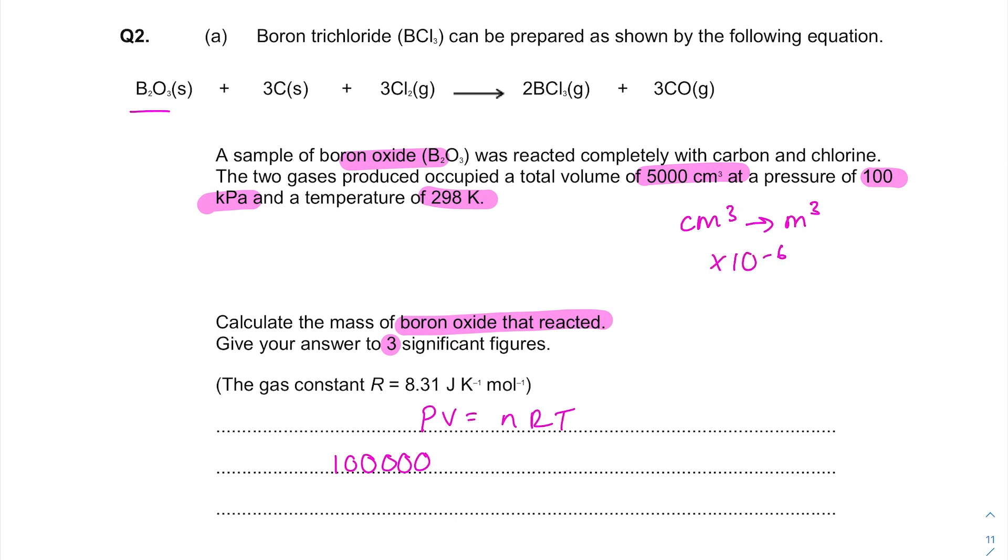So 5,000 times 10⁻⁶ equals the number of moles after times that constant which we've been given, times the temperature in Kelvin. Now rearrange to find n. So your number of moles is 0.201907.